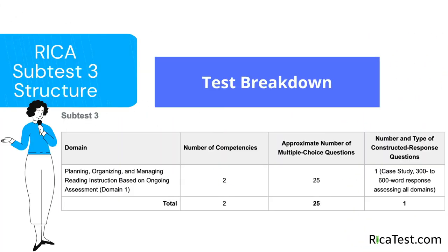The RECA subtest 3 structure includes Domain 1, which covers planning, organizing, and managing reading instruction based on ongoing assessment, as well as a case study constructed response question. Domain 1 includes a total of two competencies, and there will be approximately 25 multiple choice questions on the test, as well as a case study that requires a 300 to 600 word response.